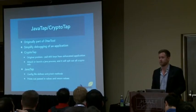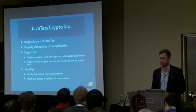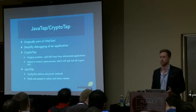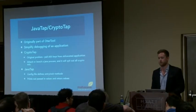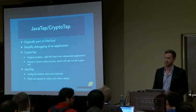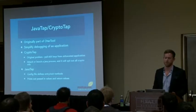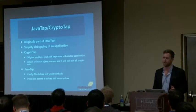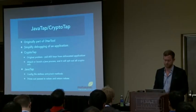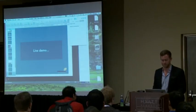CryptoTap automates the debugging process and prints out any encryption-related information from a Java application. It allows you to attach to a remote process — like we did in Eclipse — or launch an application from the command line. JavaTap is a more abstract version that lets you create a configuration file specifying entry/exit and which method to break on, then simply prints the associated information. I was going to create a video for this, but I've never done a live demo before, so we'll try it right now.